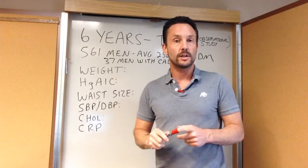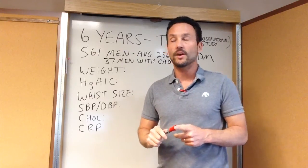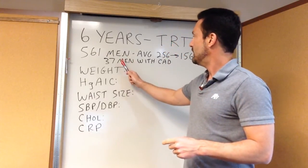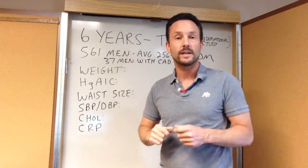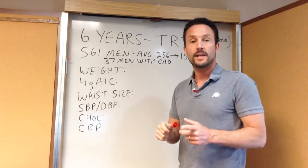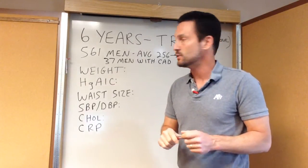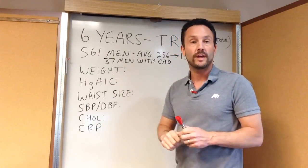In this six-year study, they monitored multiple things. In the men that had diabetes, there were actually 37 men who had pre-existing heart disease who were also put in the study, and none of them had a heart attack or stroke.